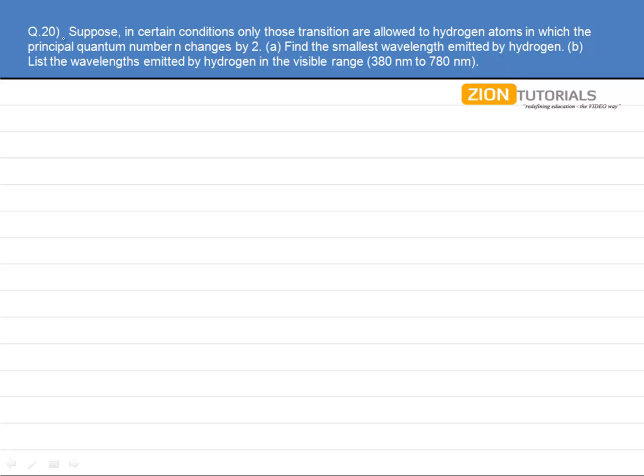As the question says, suppose in certain conditions only those transitions are allowed to hydrogen atoms in which the principal quantum number N changes by 2.